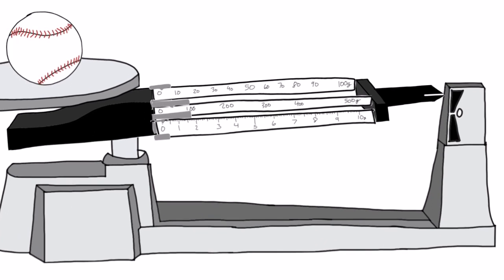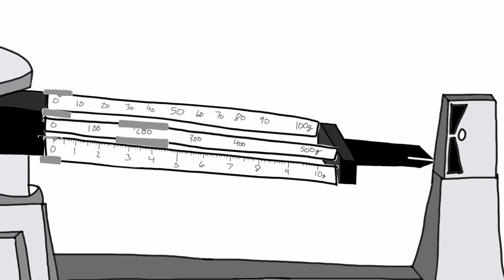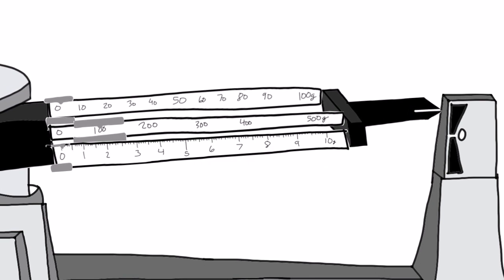Start by moving the 100-gram slider, one notch at a time. If you move the slider too far, return it one notch to the left and switch to the 10-gram slider.